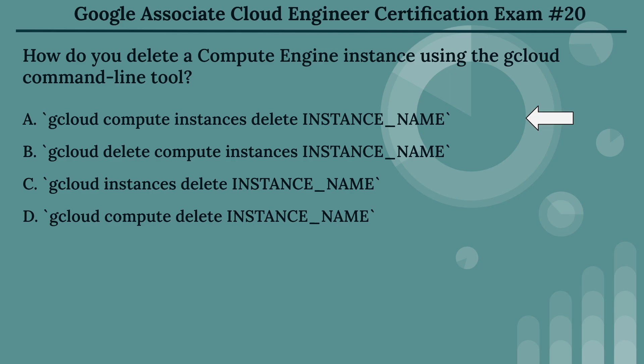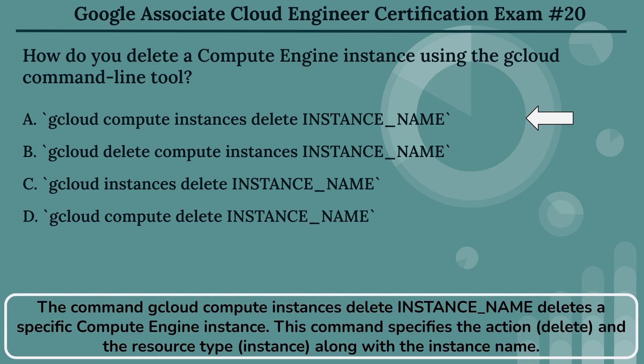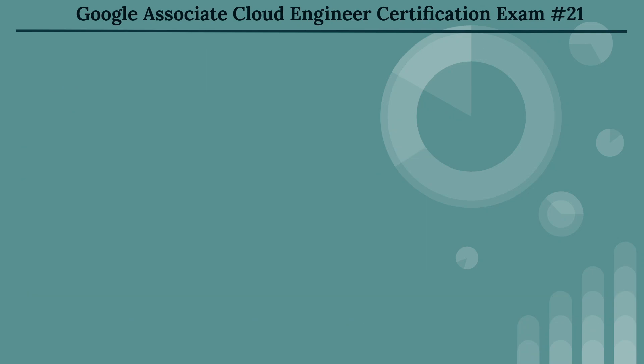The right answer is Option A: gcloud compute instances delete INSTANCE_NAME. The command gcloud compute instances delete INSTANCE_NAME deletes a specific Compute Engine instance. This command specifies the action, delete, and the resource type, instance, along with the instance name.